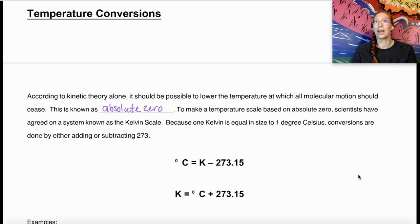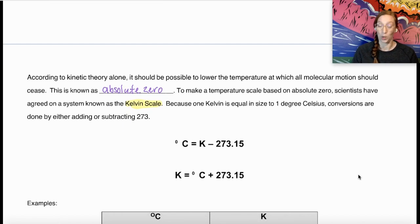To make a temperature scale based on this, scientists have agreed on a system known as the Kelvin scale, which is based a little bit on the Celsius scale. The Kelvin is equal in size to one degree Celsius. So our conversions are going to be simple. We can either add or subtract 273.15. This is a lot simpler than Fahrenheit to Celsius conversions. There's no fractions, there's no adding or subtracting 32, we're just adding or subtracting 273.15.